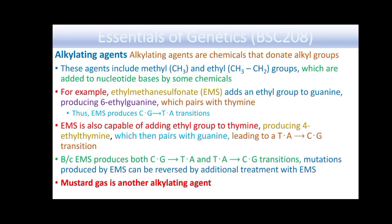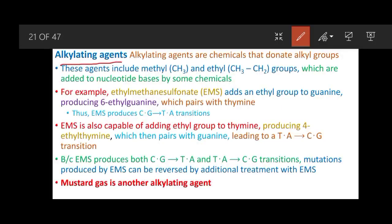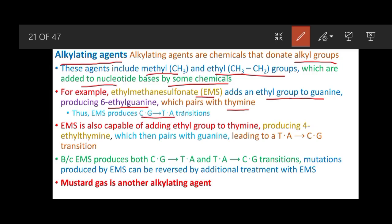Alkylating agents are chemicals that donate an alkyl group. These agents include methyl and ethyl groups added to nucleotide bases. For example, ethyl methane sulfonate (EMS) adds an ethyl group to guanine, producing 6-ethylguanine, which pairs with thymine and creates a C-to-T transition mutation. EMS can also add an ethyl group to thymine, producing 4-ethylthymine, which pairs with guanine and leads to a T-to-C transition. Because EMS produces both C-to-T and T-to-C transitions, mutations produced by EMS can be reversed by additional treatment with EMS.